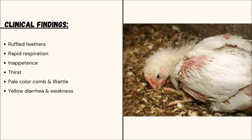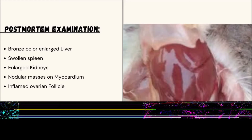Clinical findings: In foul typhoid, the following signs occur — ruffled feathers, rapid respiration, inappetence, thirst, pale-colored comb and wattle, yellow diarrhea, and weakness.